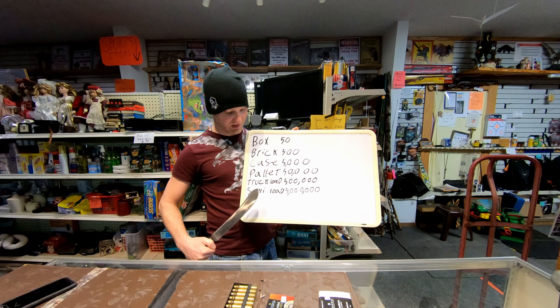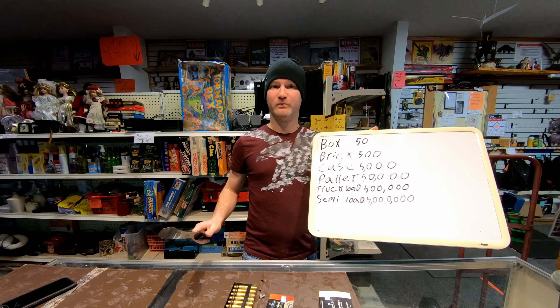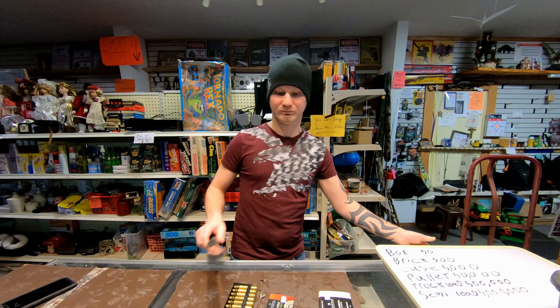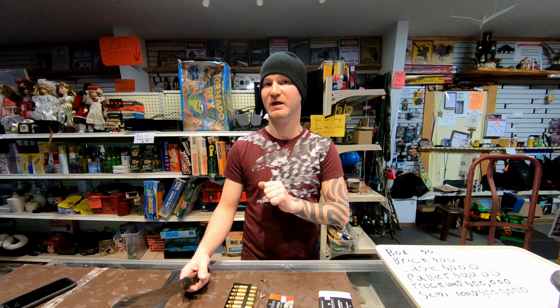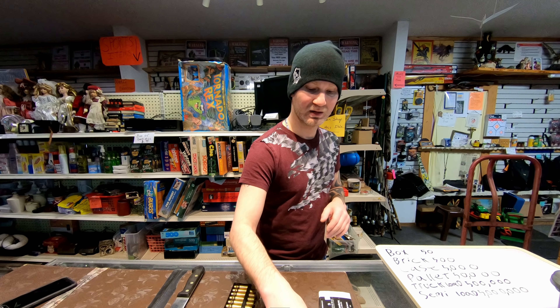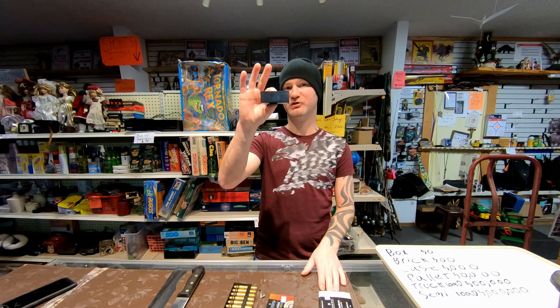Before I get into this, let's go through what they are. To the whiteboard of knowledge: a box of 22 ammunition is 50 rounds, a brick is 500, a case is 5,000, a pallet is 50,000, a truckload is 500,000, and a semi-load is 5 million. They're right on that — that is exactly what they are.